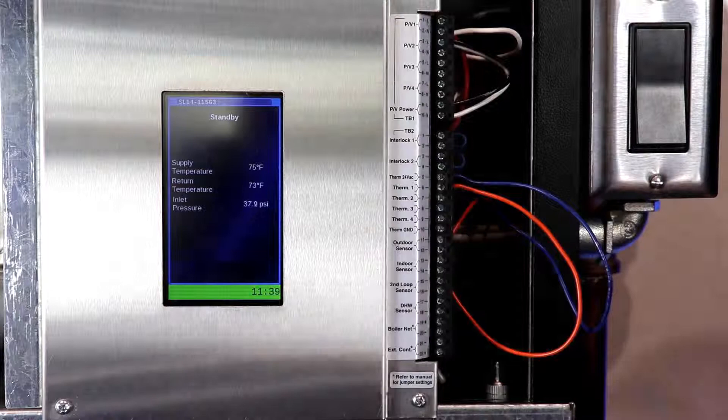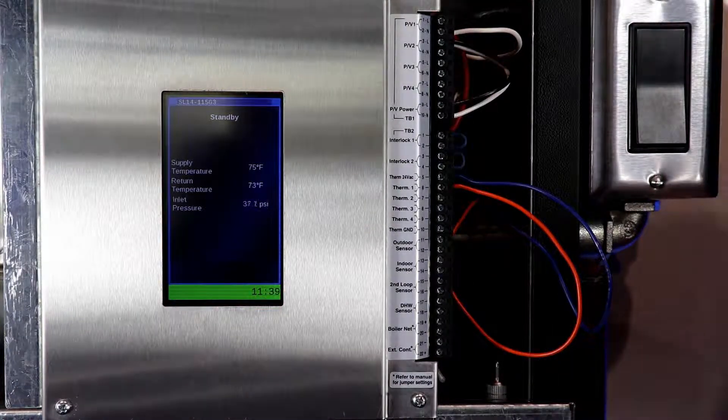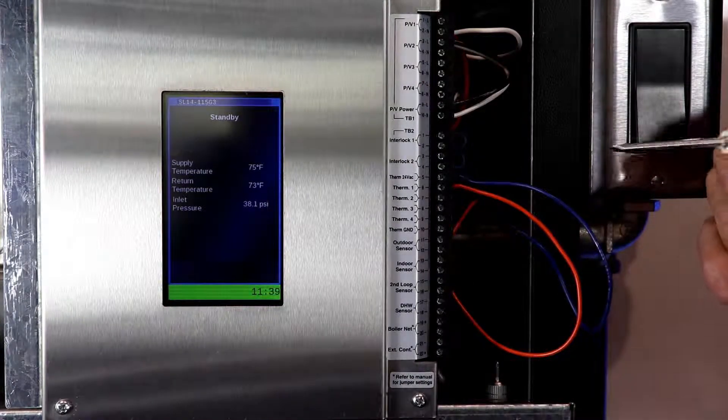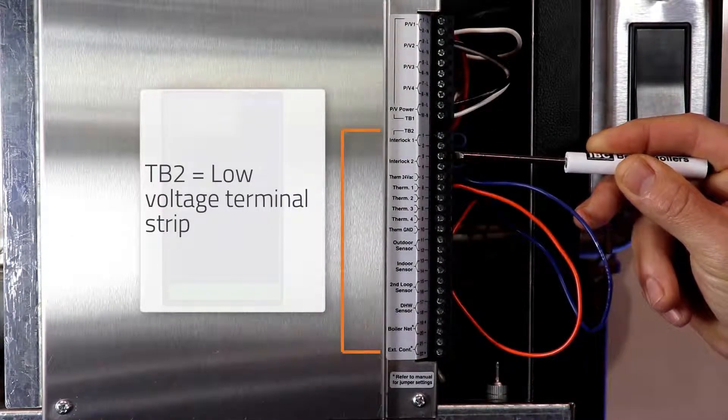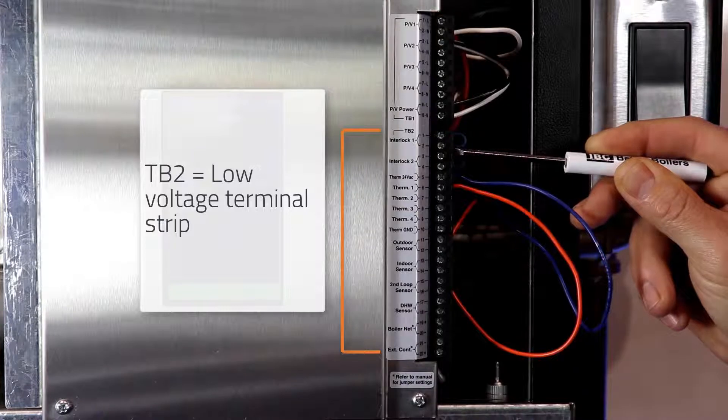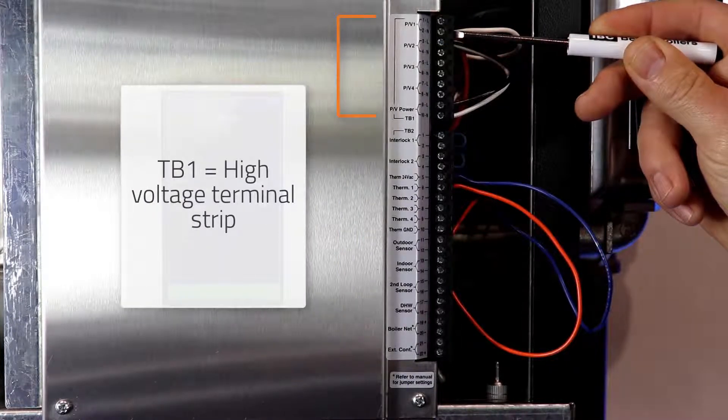To wire a dry contact call for heat to the boiler, we are going to wire all the low voltage wiring to the TB2 terminal. The corresponding high voltage is then wired from the TB1 terminal.